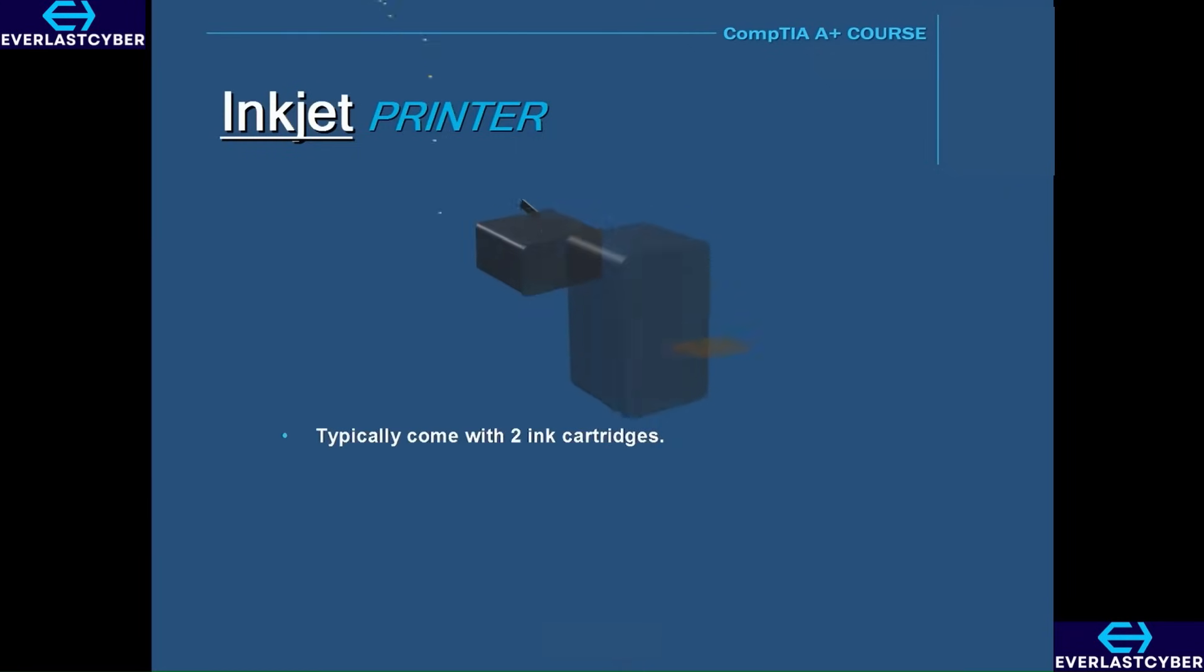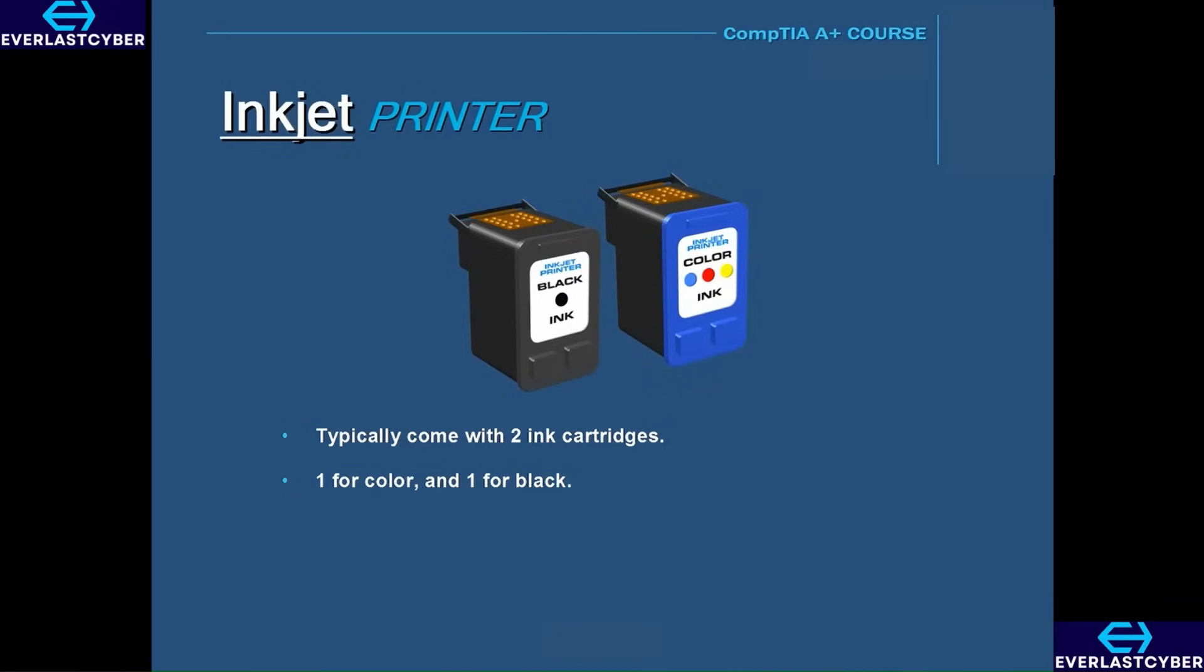Inkjet printers typically come with two ink cartridges, one for color and the other for black. Inkjet printers are more affordable than laser printers, and they produce great photo quality results. But one of the drawbacks is that the ink from an inkjet printer may smudge, while ink from a laser printer does not smudge.